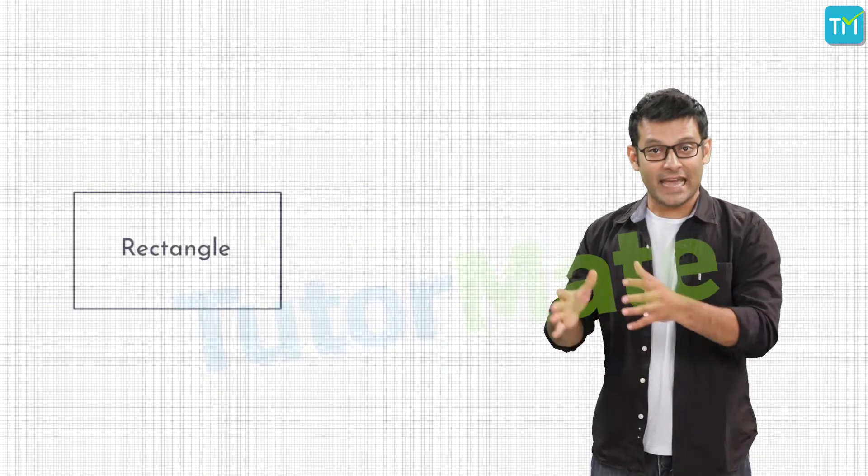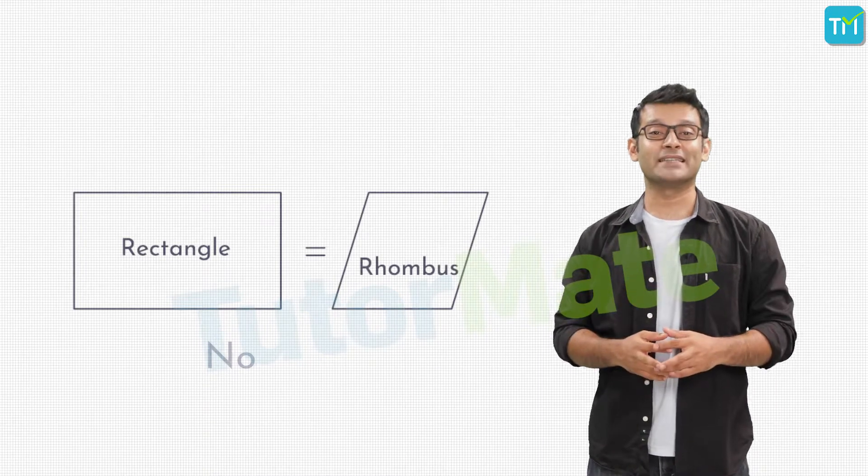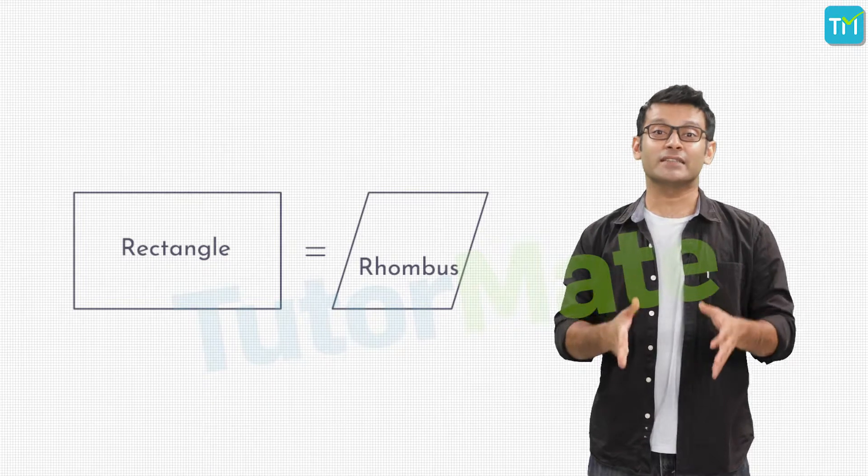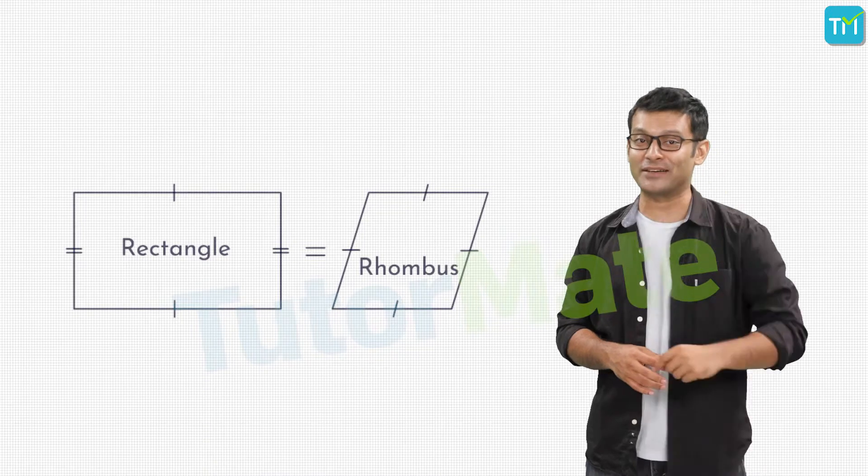Finally, can a rectangle be a rhombus? Well, no, it cannot be. Because all sides of a rectangle are not equal. In fact, a rectangle that is a rhombus is essentially a square, right?